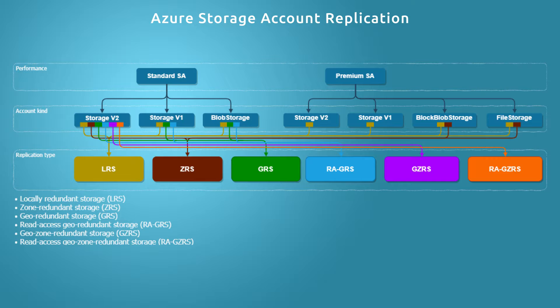If you have a premium account, you have two options for data replication: Locally Redundant Storage and Zone Redundant Storage. You need to know that you will not be able to change the replication after the deployment of a premium account. You must determine the kind of replication and choose it from the start; otherwise you can only change it through data migration, which involves a lot of time and data transfer.